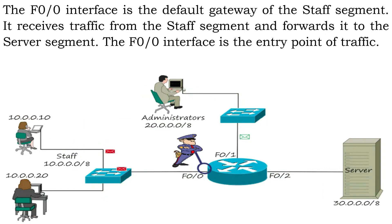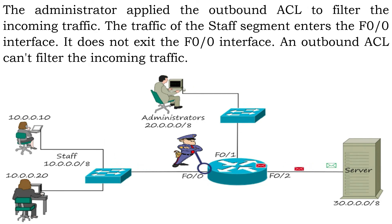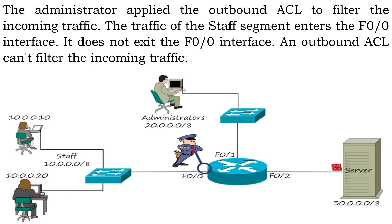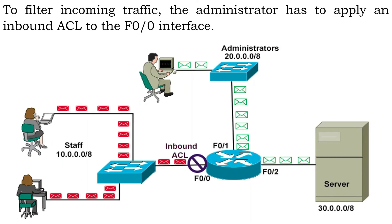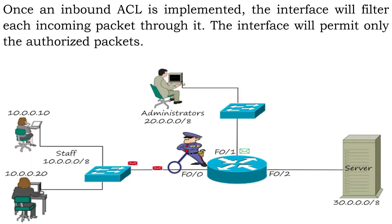The F0/0 interface is the default gateway of the staff segment — it receives traffic from the staff segment and forwards it to the server segment. The F0/0 interface is the entry point of traffic. The administrator applied the outbound ACL to filter the incoming traffic, but the traffic of the staff segment enters the F0/0 interface; it does not exit it. An outbound ACL cannot filter incoming traffic. To filter incoming traffic, the administrator has to apply an inbound ACL to the F0/0 interface.